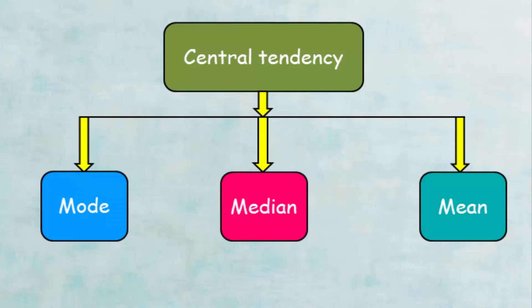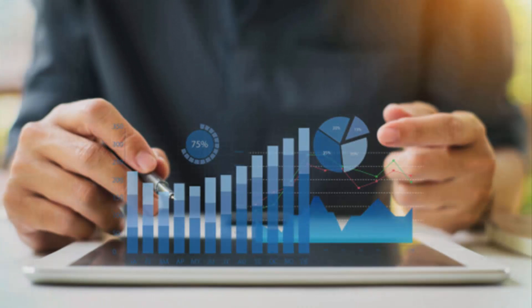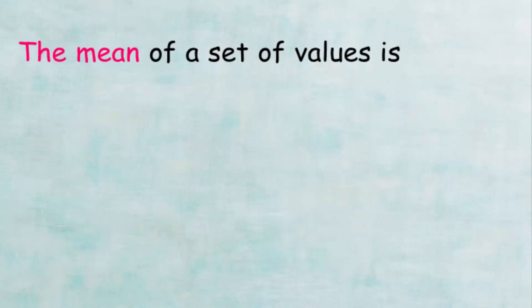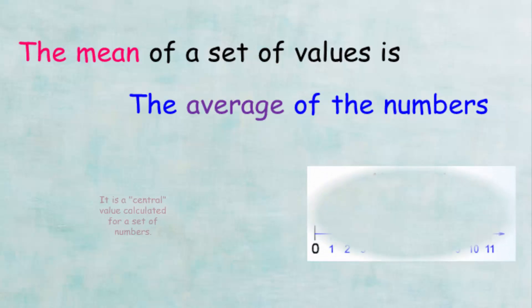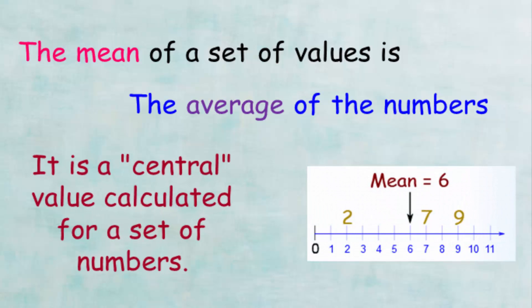The arithmetic mean is one of the most important definitions in statistics. It helps us calculate an average value for a set of values. The arithmetic mean of a set of values is the average of those numbers — a central value calculated for a set of numbers.